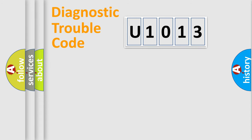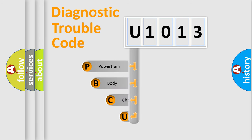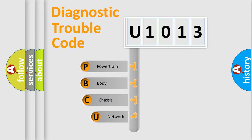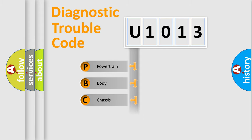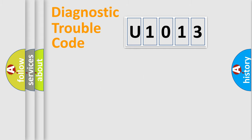Let's do this. First, let's look at the history of diagnostic fault code composition according to the OBD2 protocol, which is unified for all automakers since 2000. We divide the electrical system of the automobile into four basic units: Powertrain, Body, Chassis, and Network.